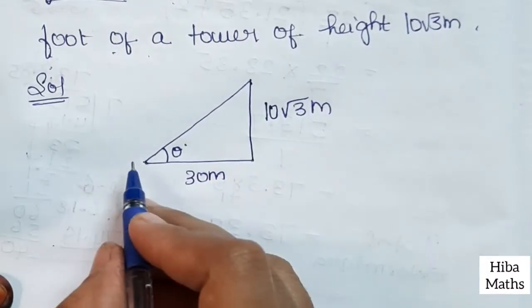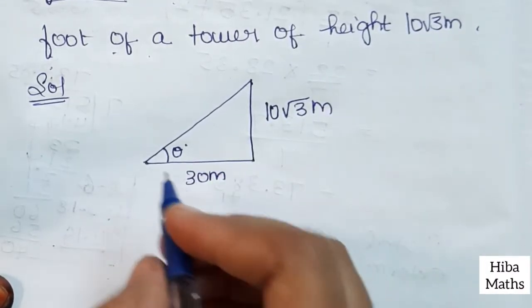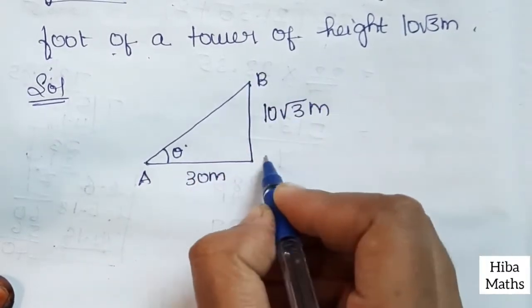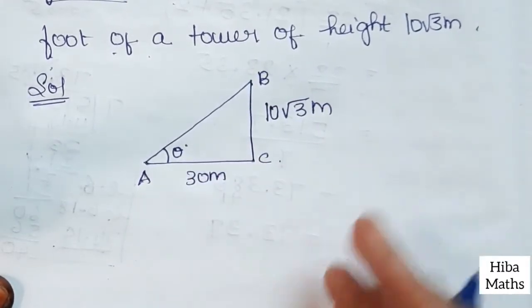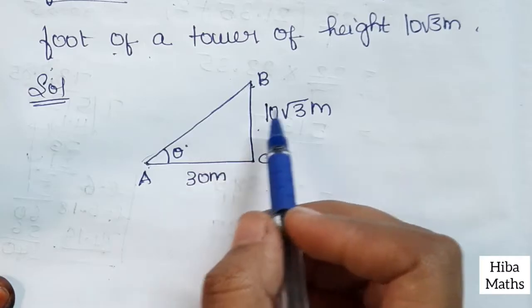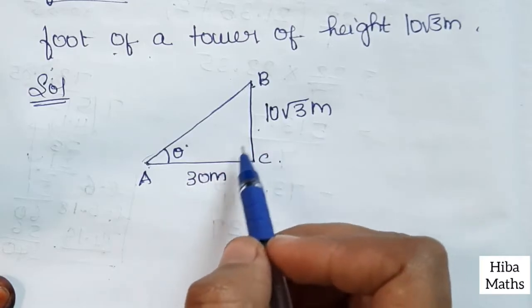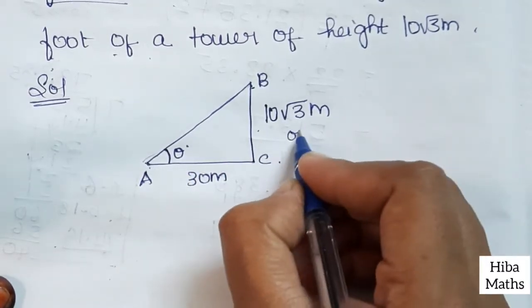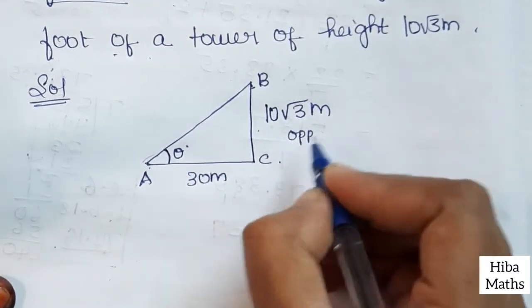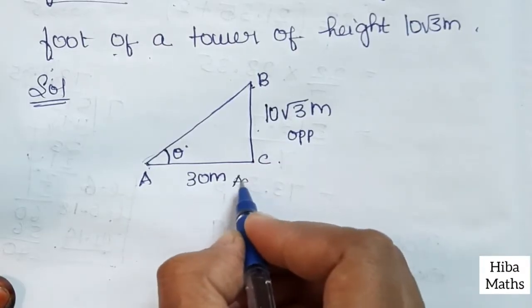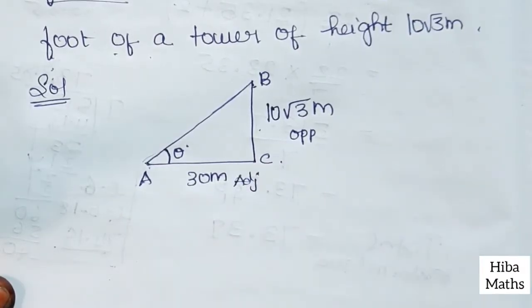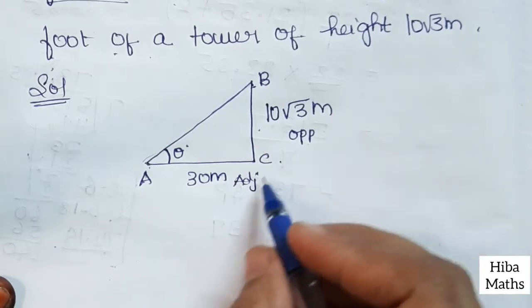This is a right angle triangle. Let's plot the points A, B, C. This is theta, and we identify the opposite side and the adjacent side. The opposite side is the height of the tower, and the adjacent side is the distance from the foot.